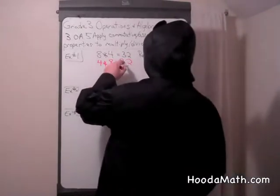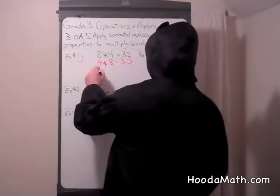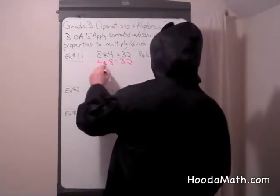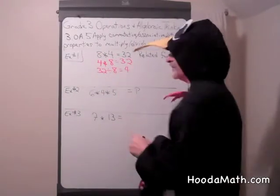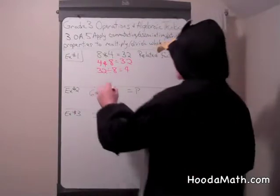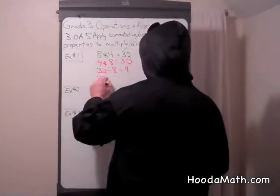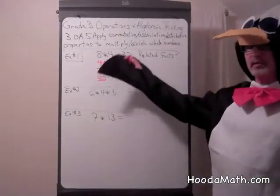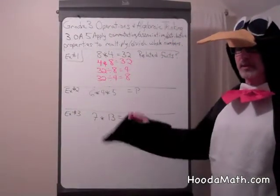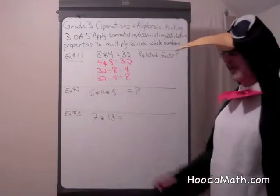We can also move our product 32 and divide by 8 and we get 4. We can also use the total 32 and divide it by 4, which gives us 8. All of these are related multiplication and division facts.